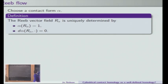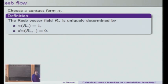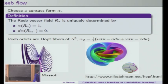The first equation, alpha of R equals 1, gives a normalization condition for the Reeb vector field. The second, saying that if we contract alpha with d-alpha we get zero, tells us that the Reeb vector field points in the unique null direction of d-alpha. As a quick example, it turns out that Reeb orbits are Hopf fibers of S3. Here I wrote down the standard contact form on S3.